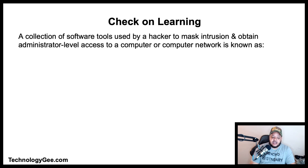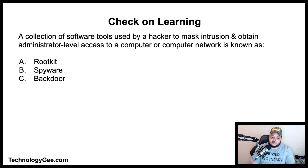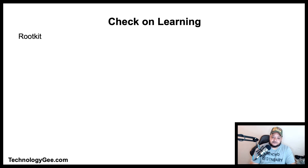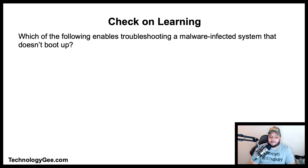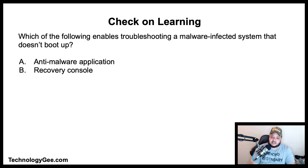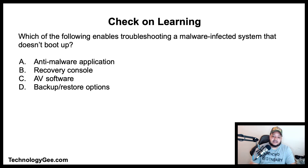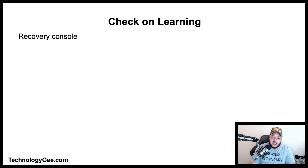Question 2: A collection of software tools used by a hacker to mask intrusion and obtain administrative level access to a computer or network is known as what? Is it a rootkit, spyware, a back door, or a Trojan? The correct answer is a rootkit. Question 3: Which of the following enables troubleshooting a malware-infected system that doesn't boot up? Is it an anti-malware application, recovery console, antivirus software, or backup and restore options? The correct answer is the recovery console.